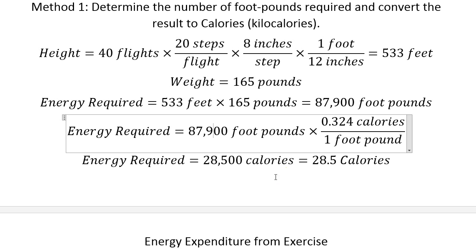And if I convert the foot-pounds to calories, there's 0.324 calories per foot-pound. I used Wolfram Alpha to make the conversion.